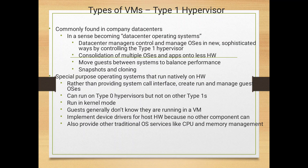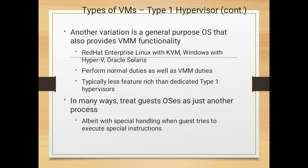Type 1 hypervisors are commonly found in company data centers, essentially becoming data center operating systems. Data center managers control and manage OSes in sophisticated ways using Type 1 hypervisors. This allows consolidation of multiple OSes and applications onto less hardware, moves guests between systems to balance performance, and supports snapshots and cloning. Type 1 can run on a Type 0 hypervisor but not on another Type 1, and runs in kernel mode, providing traditional OS services like CPU and memory management.